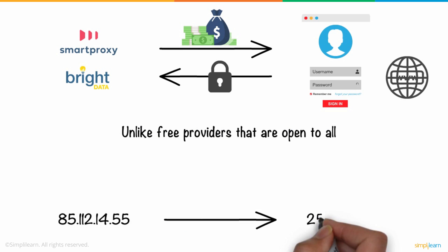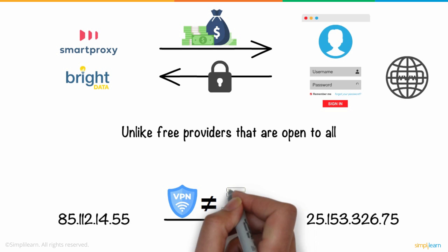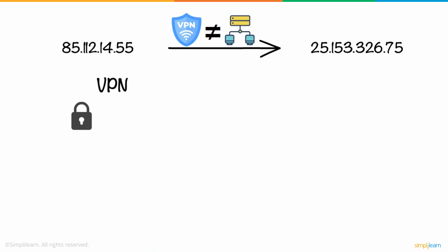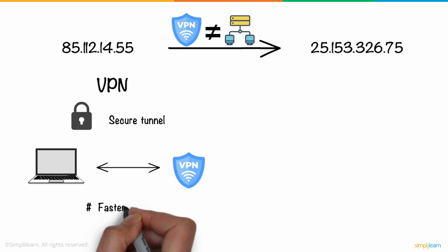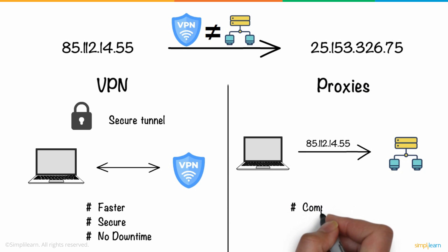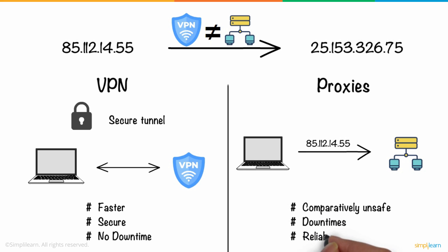When it comes to hiding IP addresses, many people consider a VPN to be the primary solution. While that's true to some extent, there are a few things proxies do differently. In the case of VPNs, extra encryption is also carried out to create a secure tunnel between the user's device and a VPN server. A VPN is usually much faster, more secure thanks to multiple layers of encryption, and has little to no downtime. Proxies tend to be comparatively unsafe, with the service owners having the exact IP address of the end user and having no guarantees regarding downtimes and reliability.